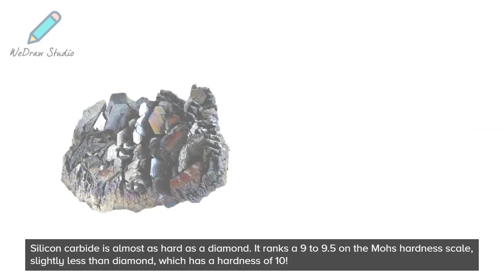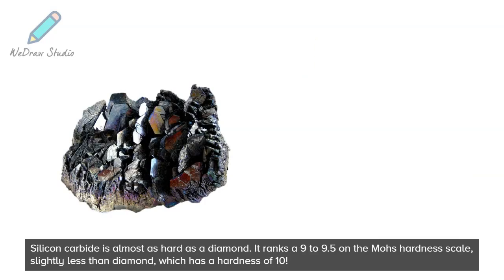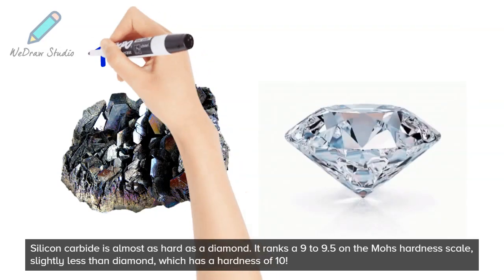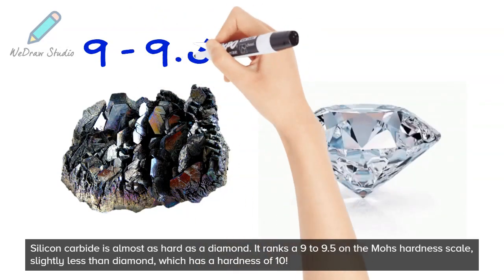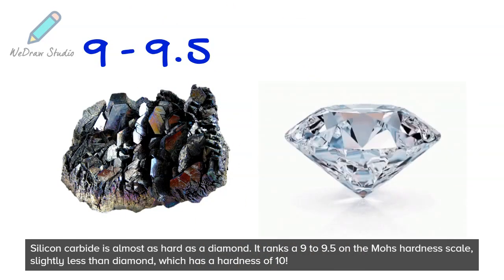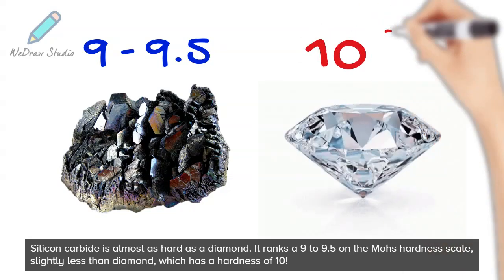Silicon carbide is almost as hard as a diamond. It ranks 9 to 9.5 on the Mohs hardness scale, slightly less than diamond, which has a hardness of 10.